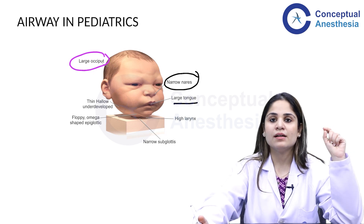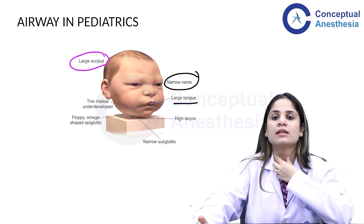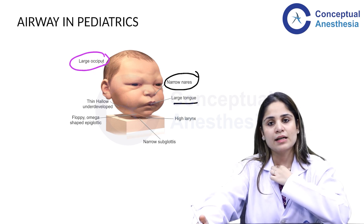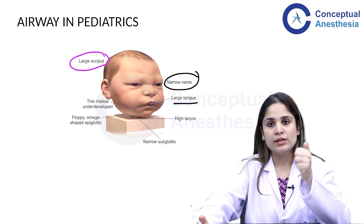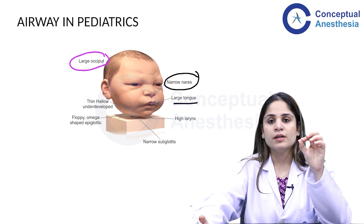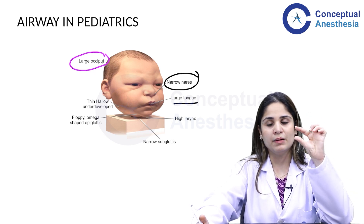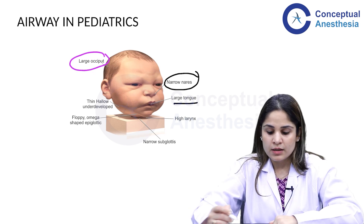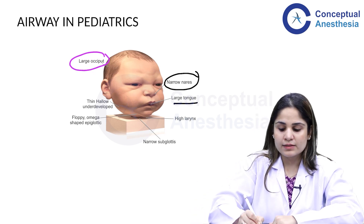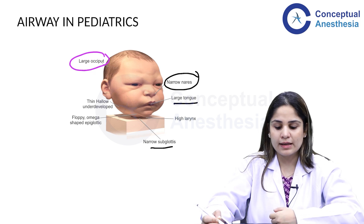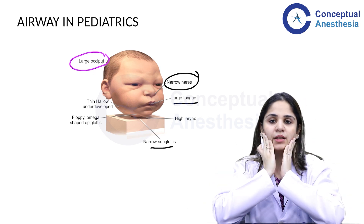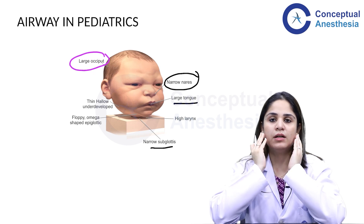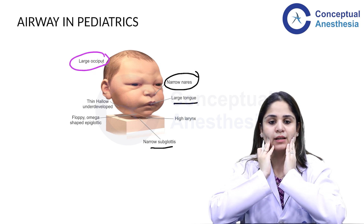Fourth is a higher larynx. In children, the larynx is situated at the C2–C3 level, whereas in adults it is at C3–C4. While intubating, remember that you need a shorter blade on the laryngoscope because the larynx is higher up. Fifth is a narrow subglottis, which we will discuss in more detail shortly. Sixth is a thin, underdeveloped mandible, which can result in a receding or small mandible that makes intubation difficult.